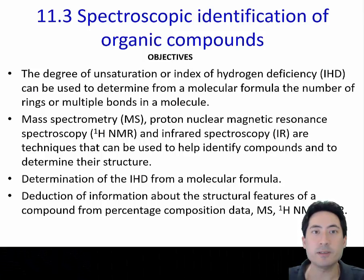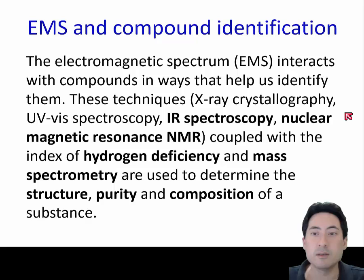Lesson 11.3 Spectroscopic Identification of Organic Compounds. These are the objectives that we're going to cover. The methods we're going to use are based on the electromagnetic spectrum, X-rays, UV, infrared and nuclear magnetic resonance and the way that they interact with the compounds coupled with hydrogen deficiency and mass spectrometry. We're going to use those to determine the structure, purity and composition of a substance.